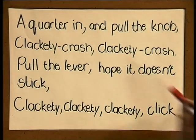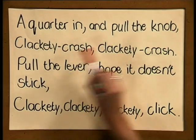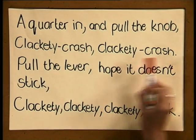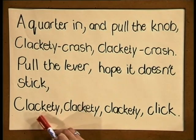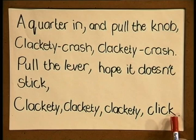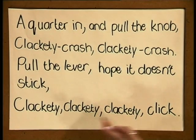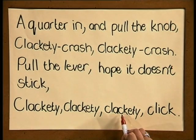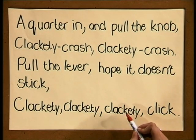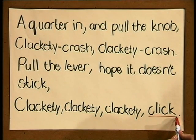Now let's look at an example of onomatopoeia in a poem. 'A quarter in and pull the knob. Clackety crash, clackety crash. Pull the lever. Pull the lever. Hope he doesn't stick. Clackety, clackety, clackety, click.' The title of this poem is 'Coin Machine', and a quarter is the American 25 cent piece. The words 'clackety crash' are quite harsh and jarring and echo the sound coins make as they drop into the machine. 'Clackety, clackety, clackety' gives the impression that the money continues to fall, but the final 'click' is rather final — we realize the coins are stuck.